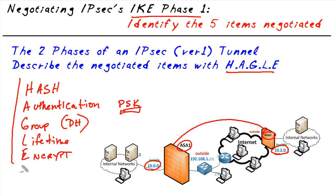Those are the five elements that the two devices have to negotiate for IKE Phase 1. With IKE version 1 there's also a Phase 2, but the five specific things to remember are hashing, authentication, group, lifetime, and encryption method — all of which the two peers need to agree to during IKE Phase 1 to become IPsec peers. I hope this has been informative for you, and I'd like to thank you for viewing.